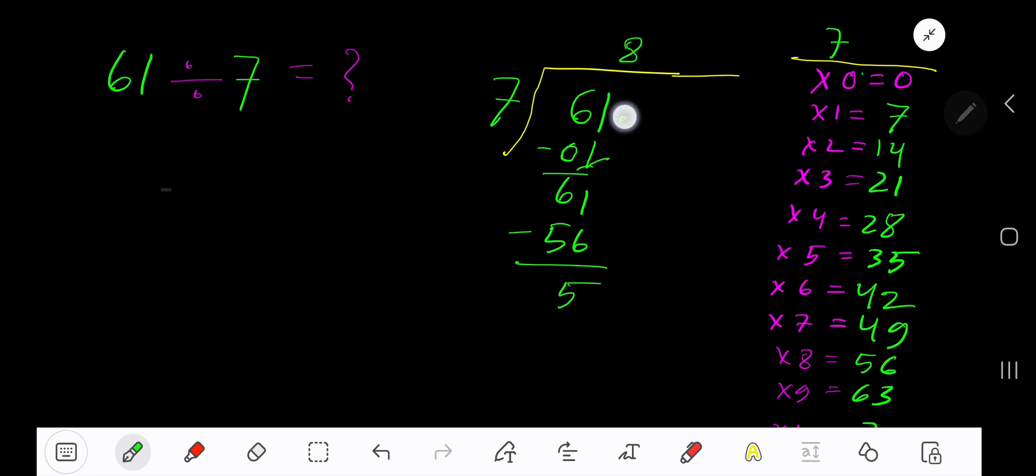If you want to write your answer in decimal form, then take a decimal and add number of zeros. Bring down the first zero. Before the zero there is a decimal. The decimal must come to the quotient directly. 7 goes into 50 how many times?